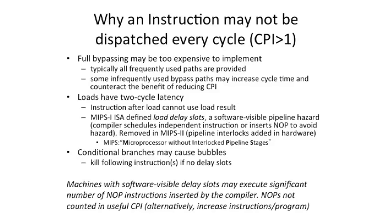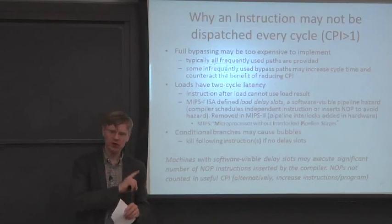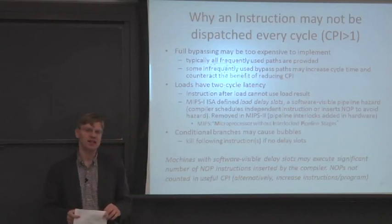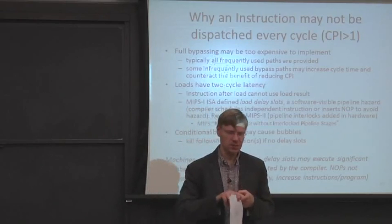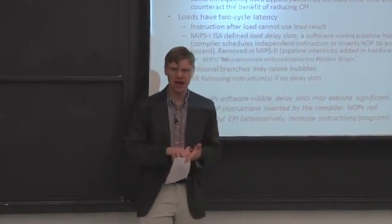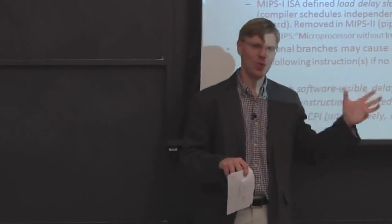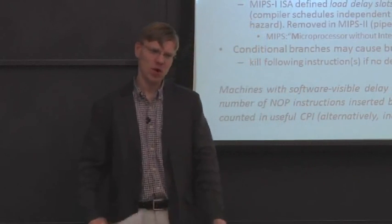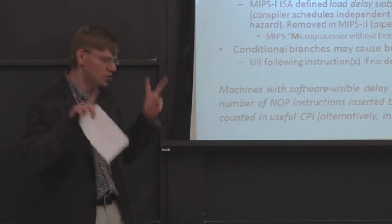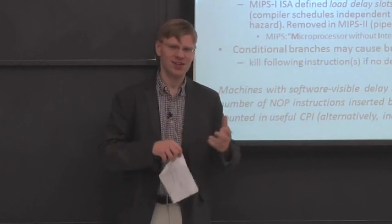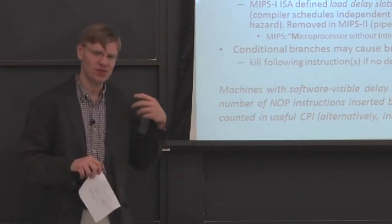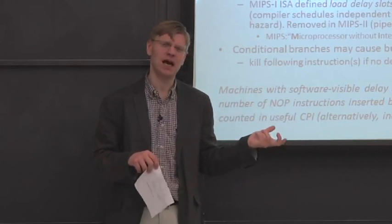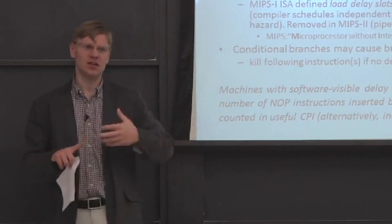Another reason CPI might be greater than one is conditional branches, which can cause bubbles — this is all the control hazards we've been talking about. You'll have to kill instructions if you don't have delay slots. An important note is that when computing CPI, you want to think about usable CPI rather than simply how many instructions are executing. If you're adding no-ops to your program and they're not doing anything useful, that should not factor into your useful CPI calculation. Always think about useful CPI — the CPI that's actually working toward the end goal of the program.